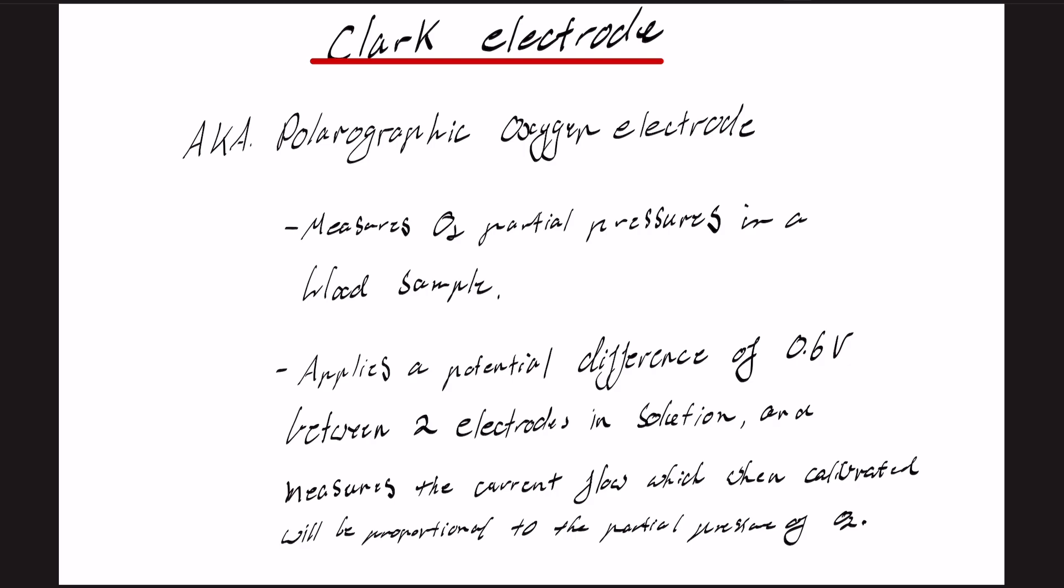So essentially a chemical reaction is happening that's creating electromotive force between these two electrodes that then completes the circuit to then give us a current so that we can then measure it.